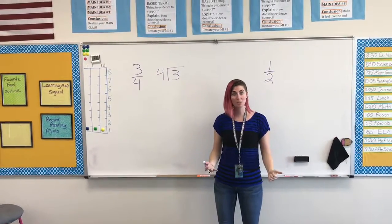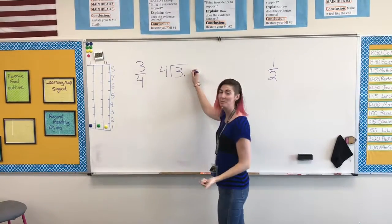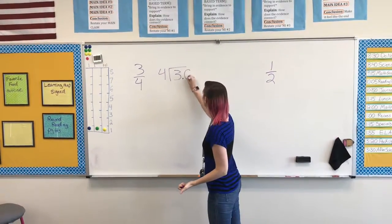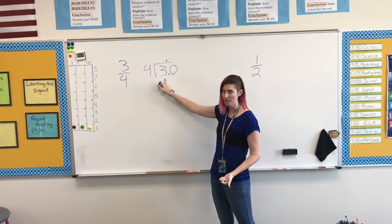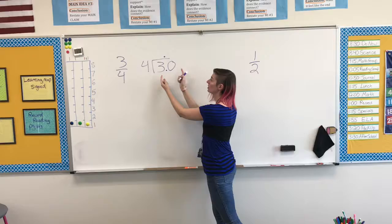Now we're going to use our decimal rule. We put a decimal here and as many zeros as we need. Bring the decimal point straight up. Now instead of looking at 4 into 3, which we can't do, we're looking at 4 fitting into 30.